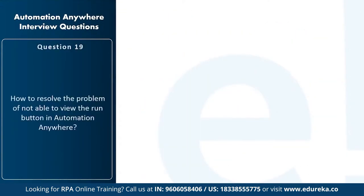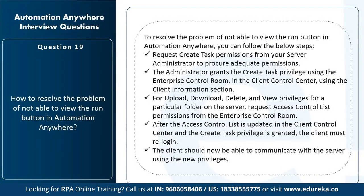The next question is: how to resolve the problem of not being able to view the run button in Automation Anywhere? Request the create task permissions from your server administrator. The administrator will grant the create task privilege using the enterprise control room in the client control center. For upload, download, delete, and view privileges for a particular folder on the server, request access control list permissions from the enterprise control room. After the access control list is updated and create task privilege is granted, the client must re-login and will now be able to communicate with the server using the new privileges.